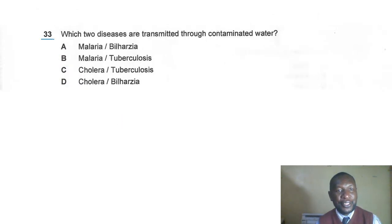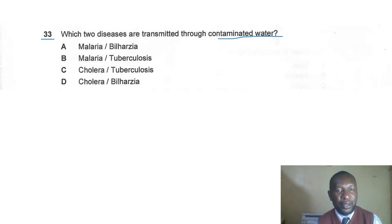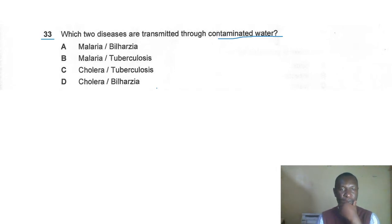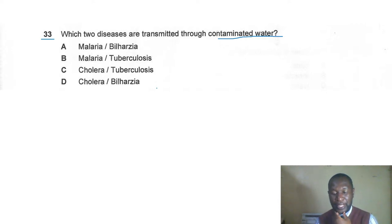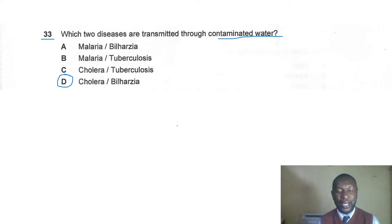Question thirty-three: which two diseases are transmitted through contaminated water? The correct answer is D — cholera and bilharzia. These are the waterborne diseases transmitted by contaminated water.